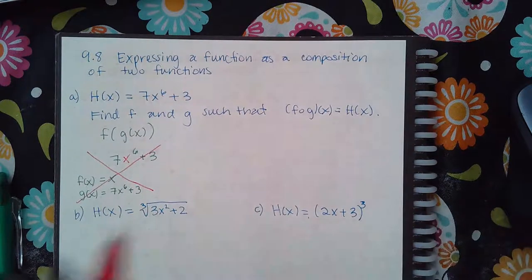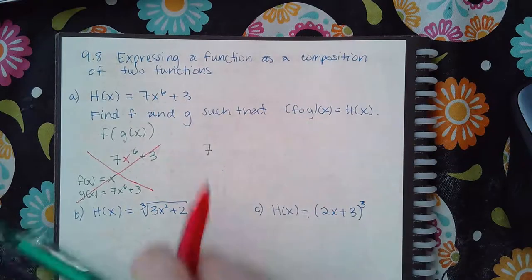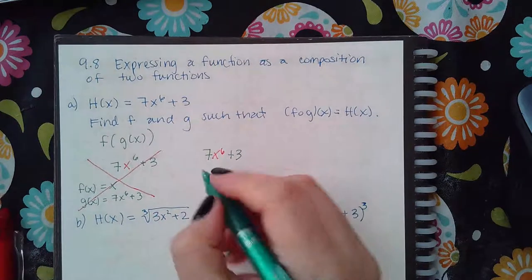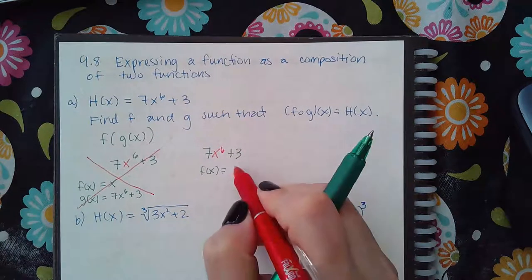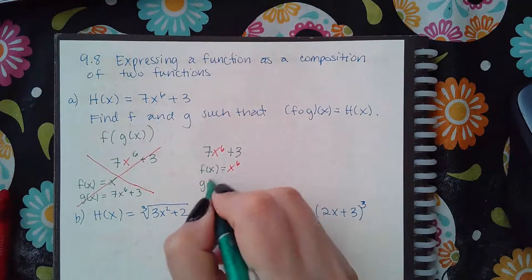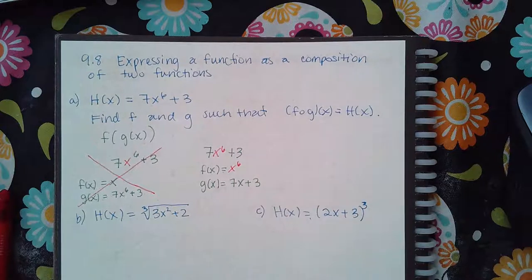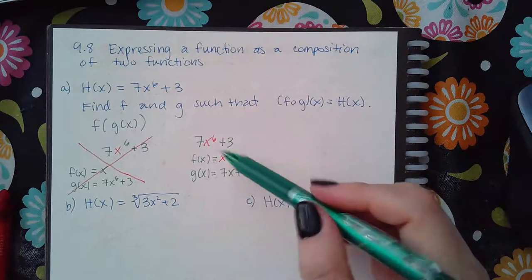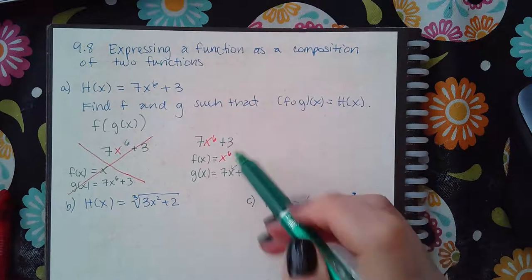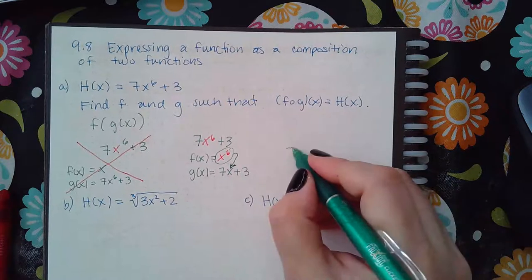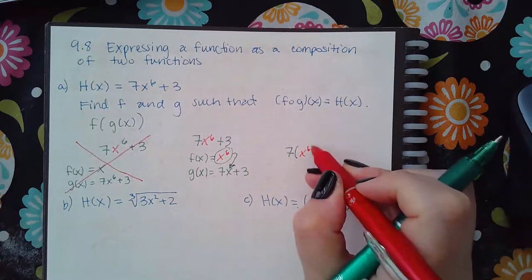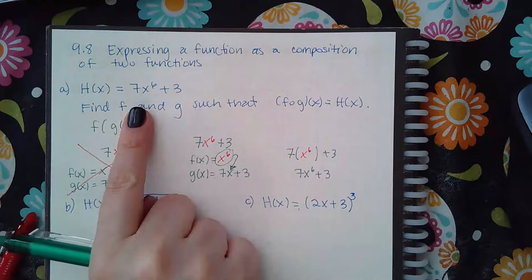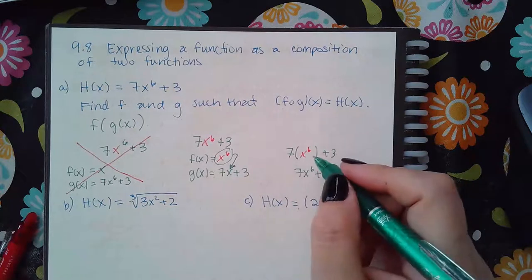The correct thinking is that f of x is the red function x to the 6th, because that's the inside, and g of x is 7x plus 3. Instead of writing x to the 6th, you put an x in its place. If you take this function and plug it in, you end up with 7x to the 6th plus 3 after simplifying — exactly the function you were given.